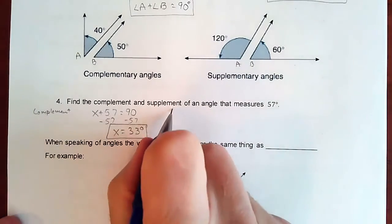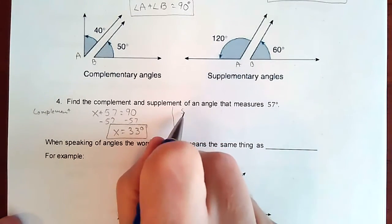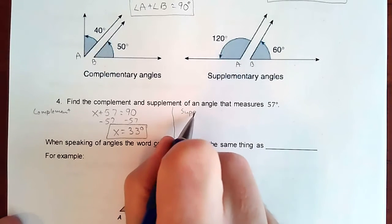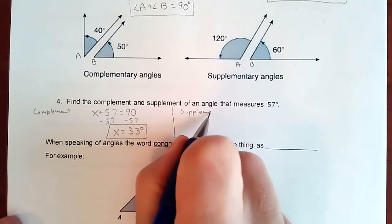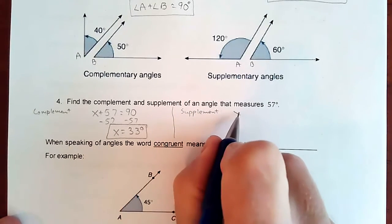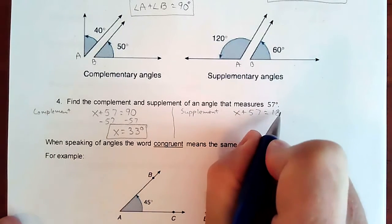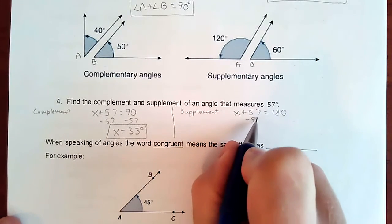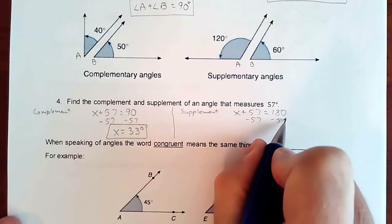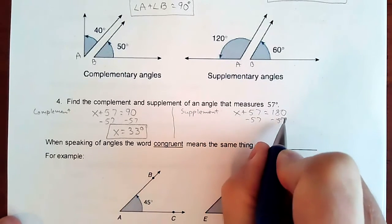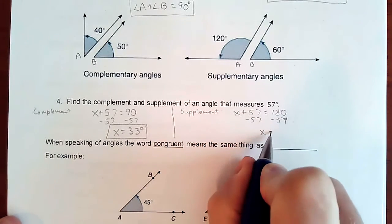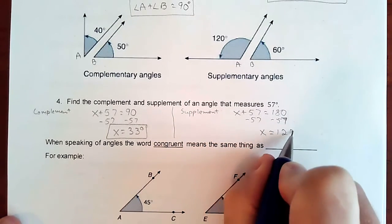And if you're doing supplement, supplement means the two angles should make 180. So you're looking at some angle plus 57 equals 180. Subtract your 57. And your angle then is 123 degrees.